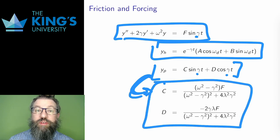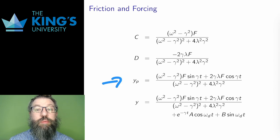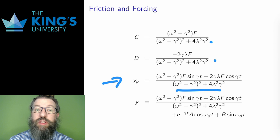So, with these coefficients, this is the particular solution. Notice the denominators are the same, so I put it all over one denominator. Then the general solution is the particular solution plus the homogeneous solutions.